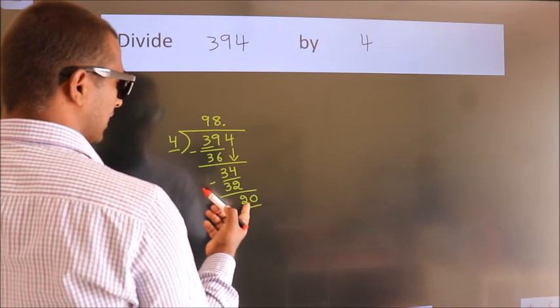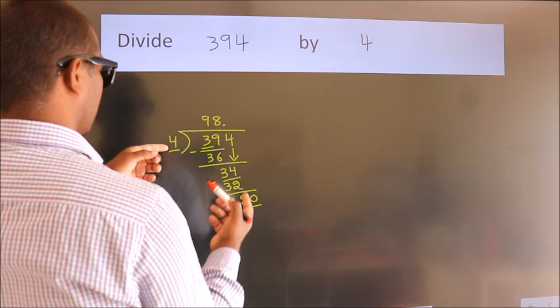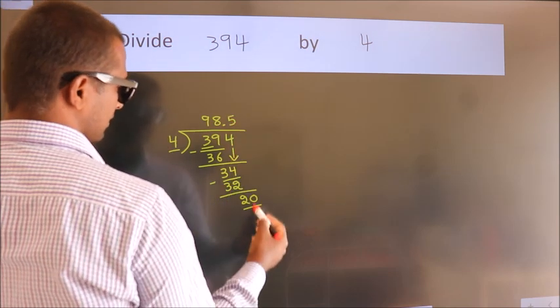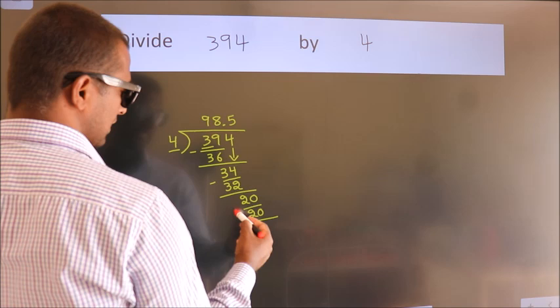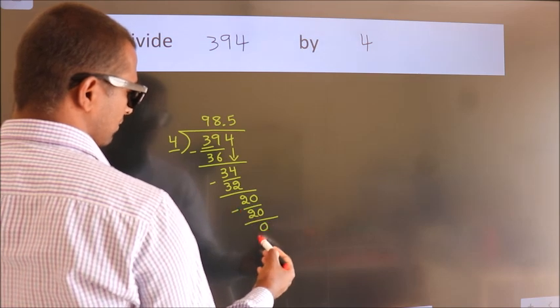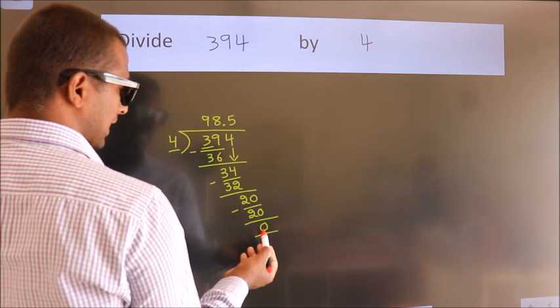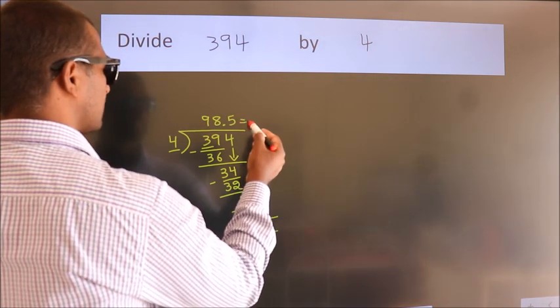When do we get 20 in the 4 table? 4 times 5 equals 20. Now we subtract, we get 0. We got remainder 0, so this is our quotient.